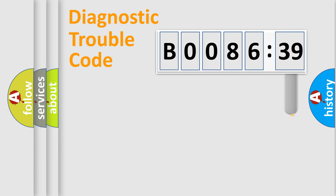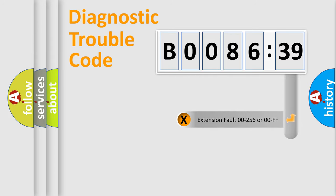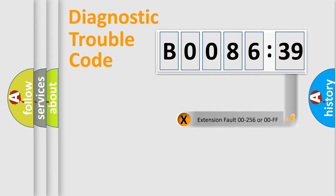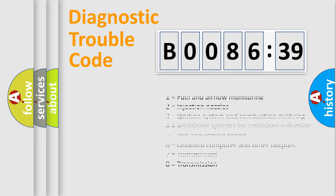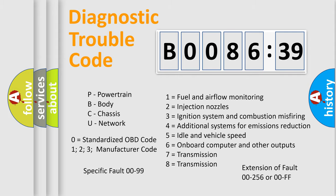The add-on to the error code serves to specify the status in more detail — for example, a short to ground. Note that such a division is valid only if the second character code is expressed by the number zero.